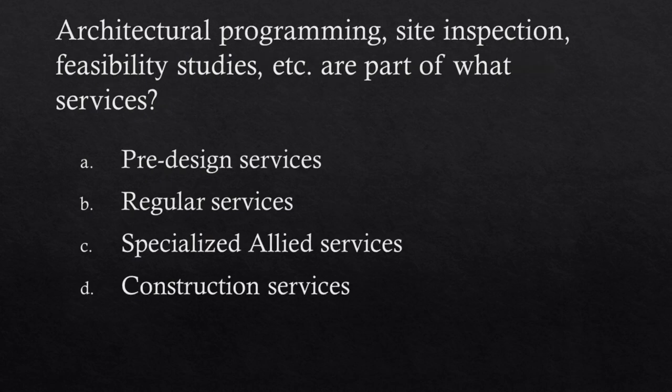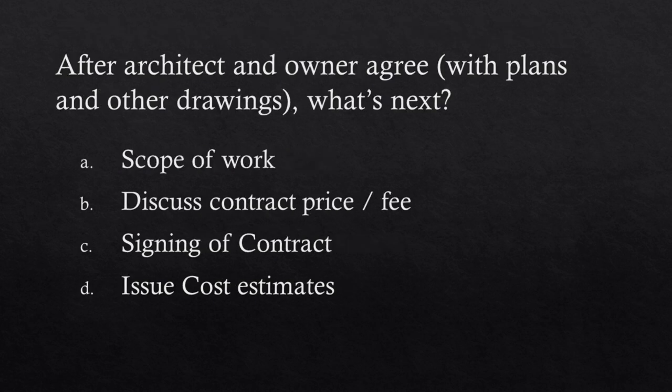Architectural programming, site inspection, feasibility studies, etc. — these are part of what services? Choices: Pre-design services, Regular services, Specialized allied services, Construction services. Answer: Pre-design services. After an architect and owner agree on plans and other drawings, what's next? Choices: Scope of work, Discuss contract price/fee, Signing of contract, Issue cost estimates. Answer: Scope of work.